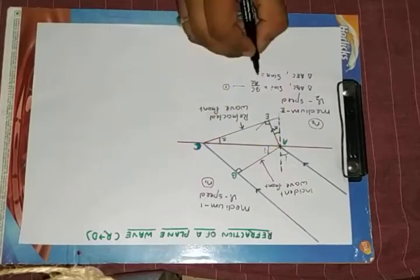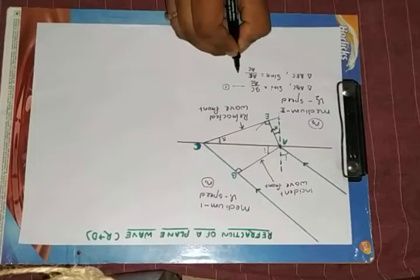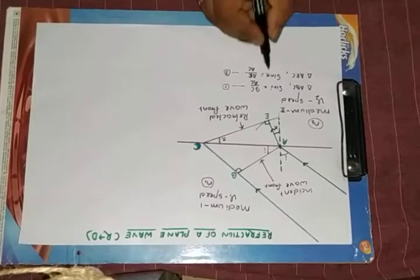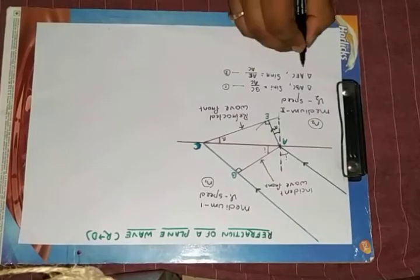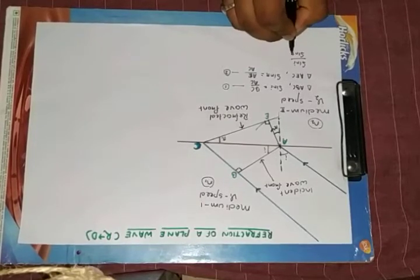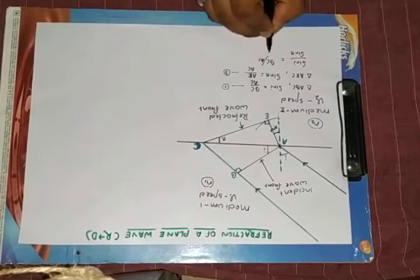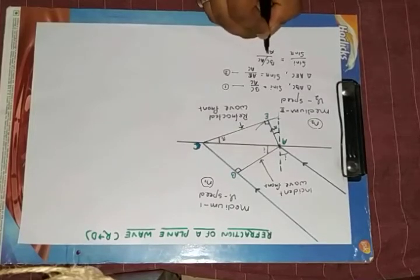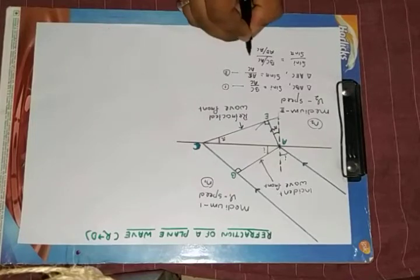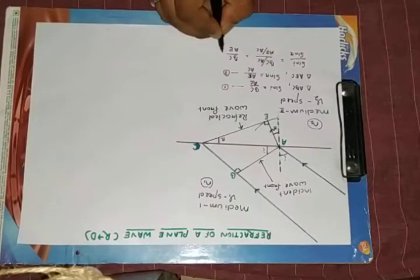equals perpendicular by hypotenuse, AE by AC. Now dividing the two equations, sin i by sin r equals BC by AC divided by AE by AC, so I got BC by AE.